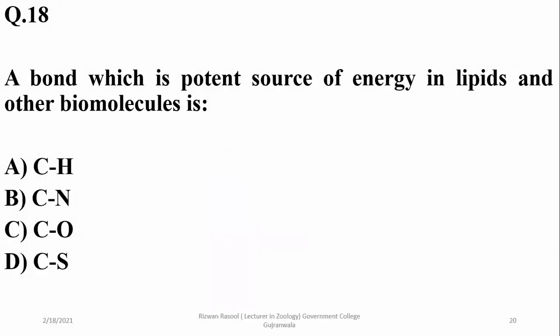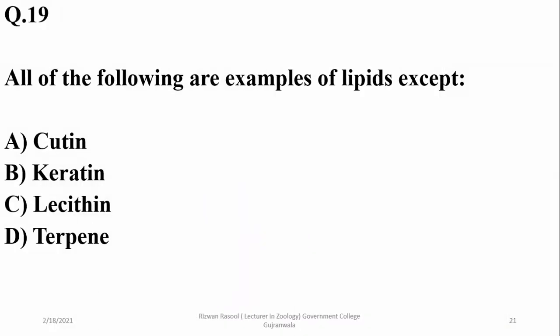A bond which is a potent source of energy in lipids and other biomolecules is carbon-hydrogen bond, and it is considered relatively stronger in the form of glycogen. So right option is A.